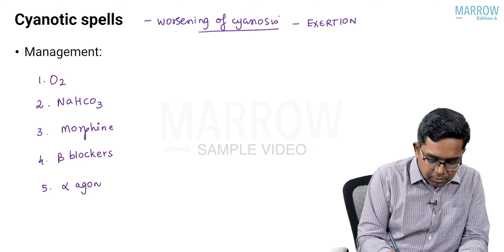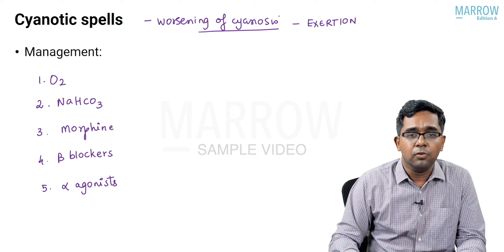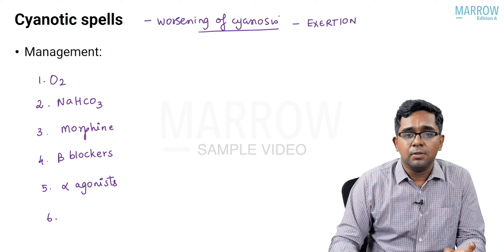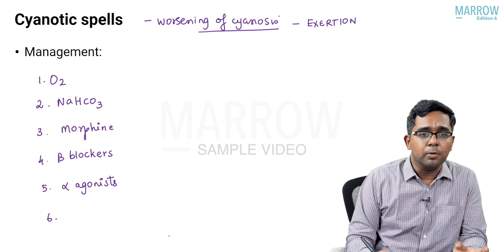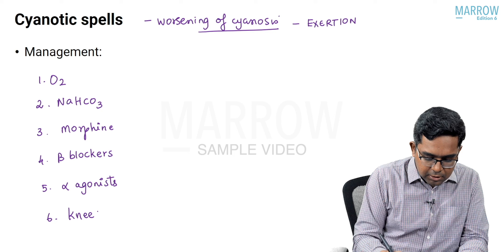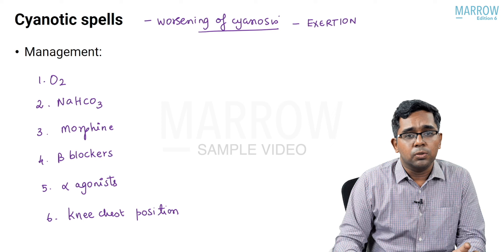Further management of cyanotic spell includes alpha agonists to increase systemic vascular resistance. Squatting is the posture spontaneously adopted by the child, as it increases systemic vascular resistance at the femoral arteries. In small children who cannot squat, the mother places the child in the knee-chest position, which compresses the femoral vessels similarly. The knee-chest position is considered a squatting equivalent.